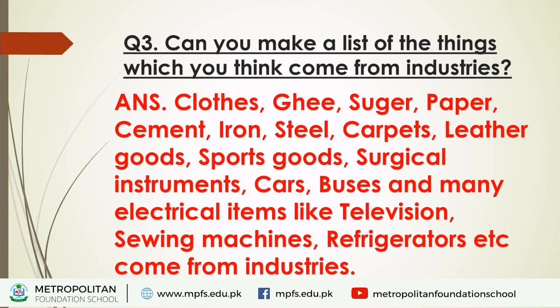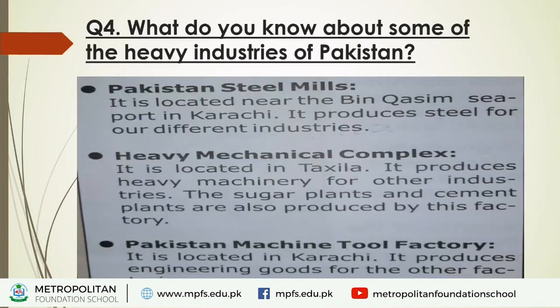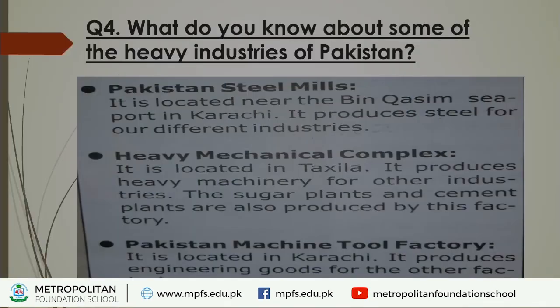Question number five: What are the major export and import items of our country? Export items of Pakistan are: rice, leather goods, carpets, raw cotton, textile goods, and sports goods. Import items include: medicine, tea, edible oil, machinery, electrical goods, and electronic goods.